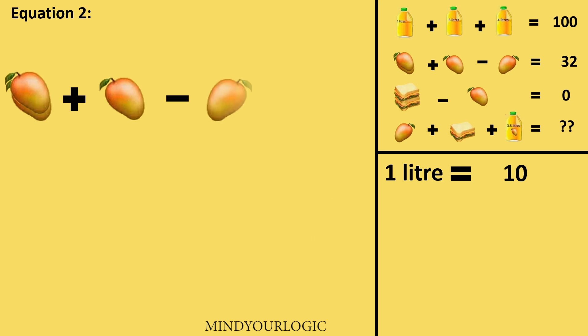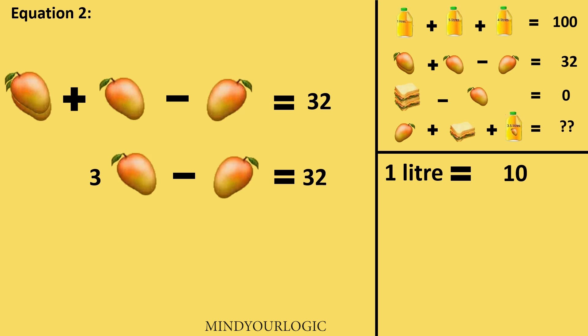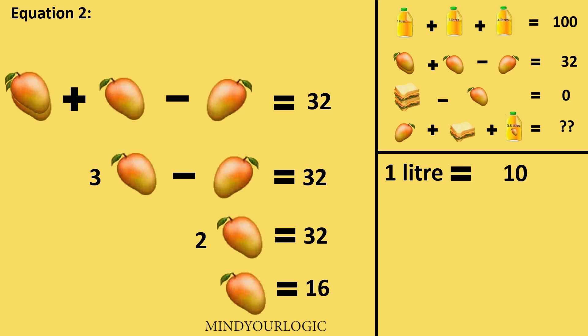In the second equation, I have 2 mangoes plus 1 mango minus 1 mango equal to 32. That means 2 mangoes is 32, and 1 mango will be 16.